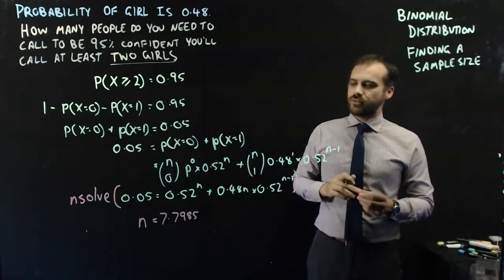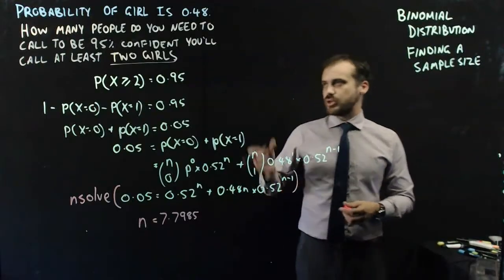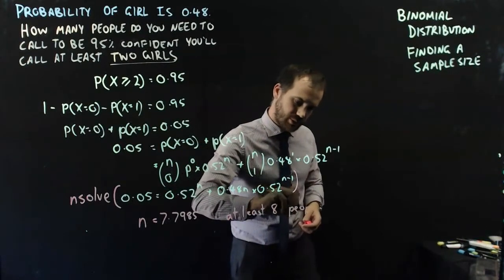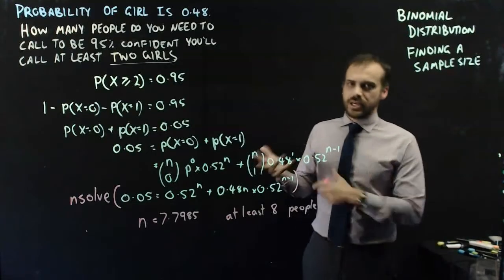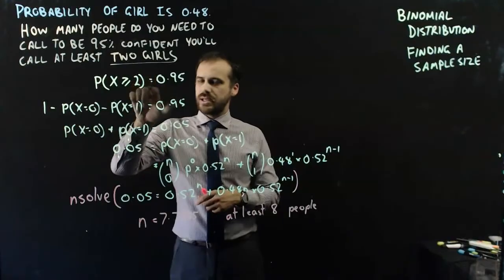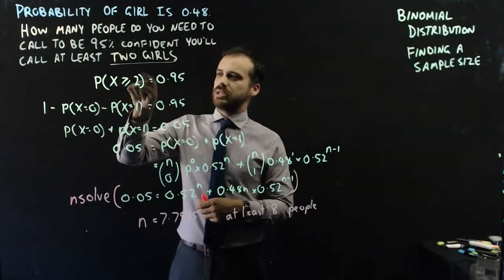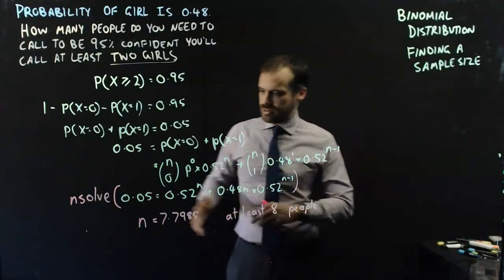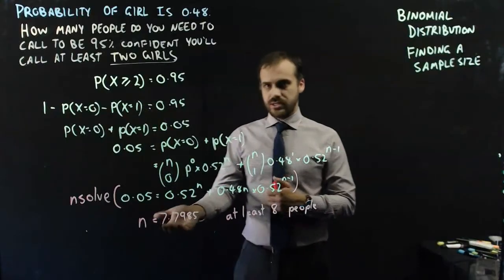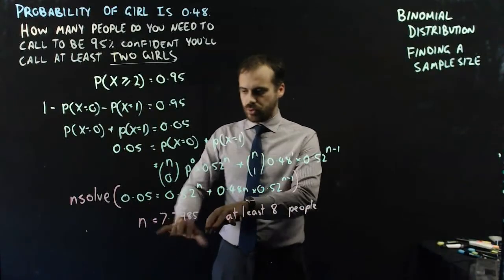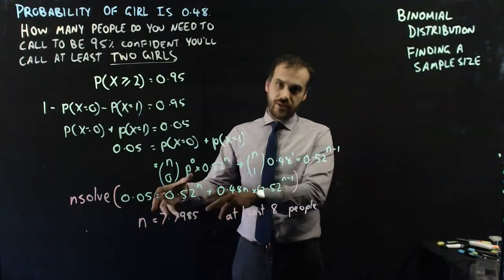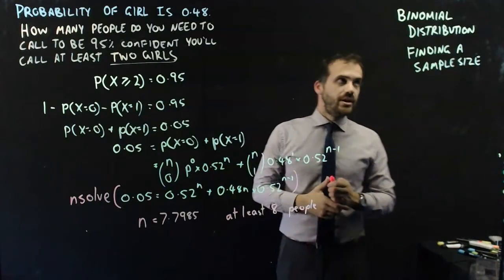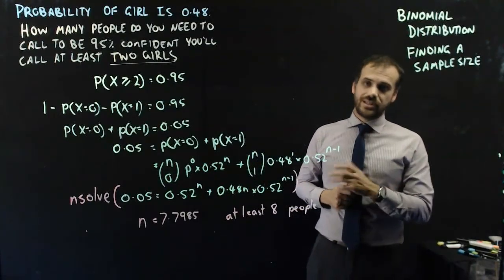How many people do you need to call to be 95% confident? You can't call decimal people, so you have to call at least 8 — you've got to round up. In textbooks they'll sometimes say P(x≥2) must be greater than 0.95 and work through with strict inequalities, but it's fine to work with equal signs as I've done. The mathematical equality gives n = 7.7985, and because it's a discrete probability, we round up to 8.